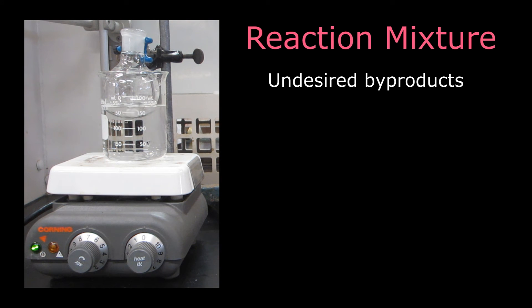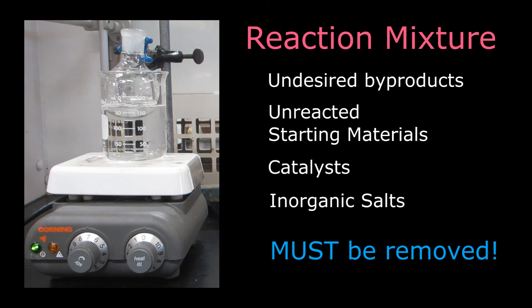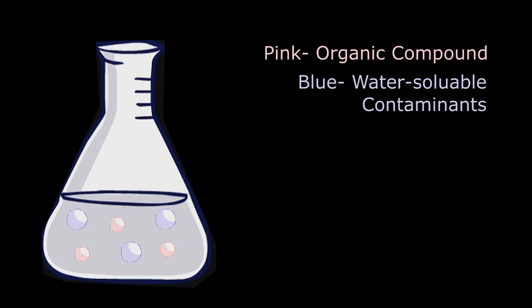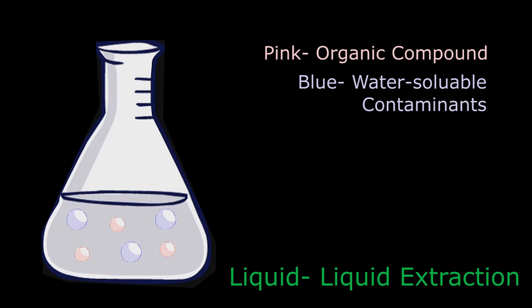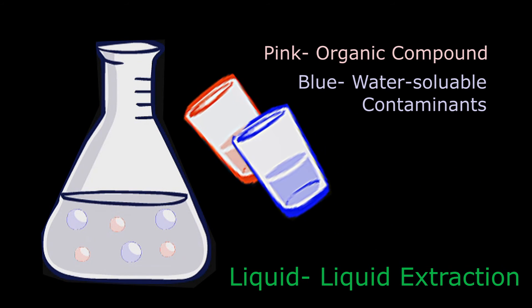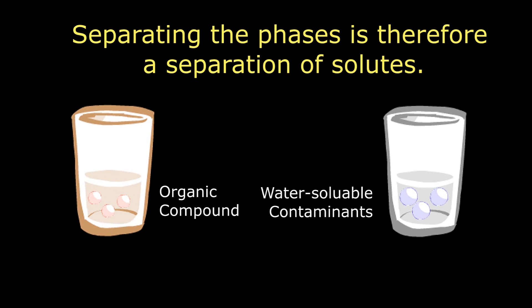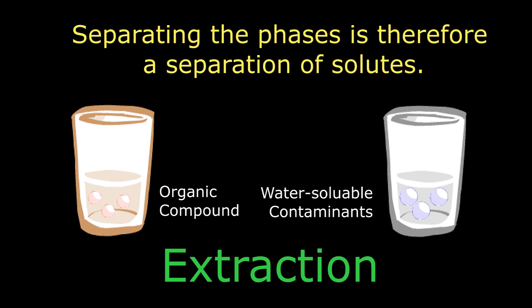After a reaction is complete, the solution often contains more than just the desired product. The mixture may contain undesired byproducts, unreacted starting materials, catalysts, or inorganic salts. These compounds have to be removed in the process of isolating the pure product. A common method used for this initial isolation is a liquid-liquid extraction, where an organic solvent and water are used to separate most organic molecules from water-soluble compounds. The organic compound would partition into the organic phase, whereas the aqueous constituent would partition into the aqueous phase. Separating the phases is therefore a separation of solutes — this technique is known as extraction.